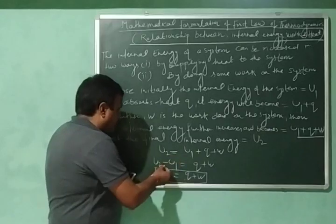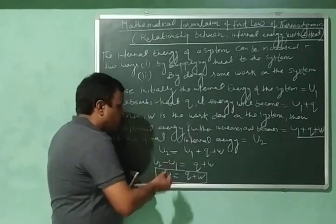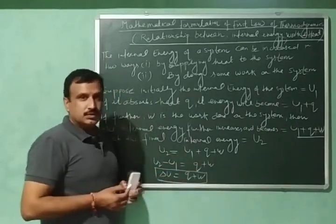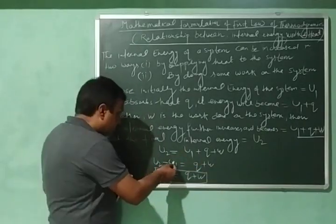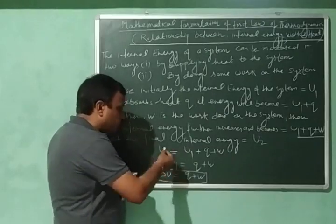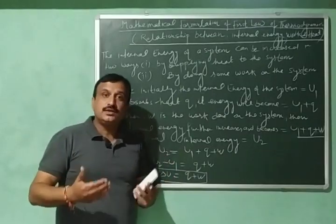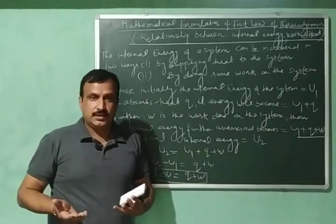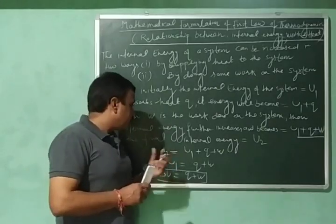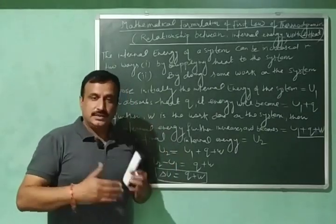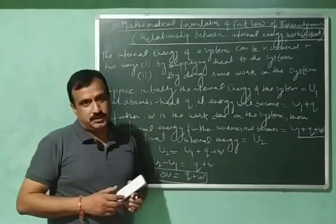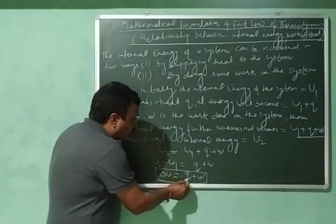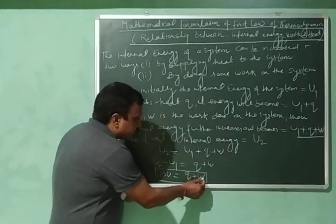Then U2 minus U1 will be equal to Q plus W. And U2 minus U1 is the change in internal energy — internal energy in the final state minus internal energy in the initial state — which is delta U. So delta U is equal to Q plus W.